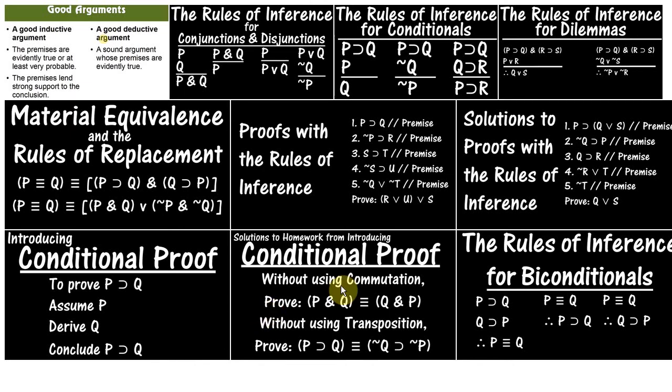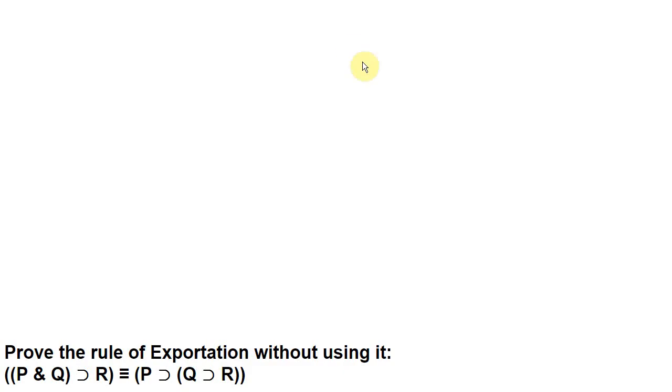Then we have solutions to conditional proof homework, and the last video was on the rules of inference for biconditionals. Okay, so in this video, we're going to prove the rule of exportation. This is one of our rules of replacement, and we're going to do some conditional proofs to prove this.